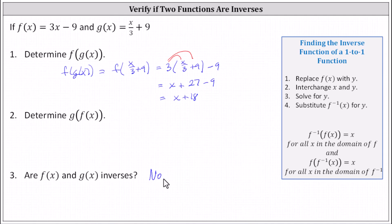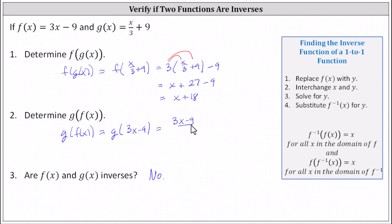The two functions are not inverses, but let's also determine g of f of x. We begin with the inner function f of x and replace f of x with the function rule of 3x minus 9, indicating g of f of x equals g of the quantity 3x minus 9. Then 3x minus 9 becomes the input into the function g, so we substitute 3x minus 9 for x in g of x, giving us the quantity 3x minus 9 divided by 3, plus 9. To simplify, we can write the quotient as two separate fractions: 3x divided by 3 minus 9 divided by 3, plus 9.